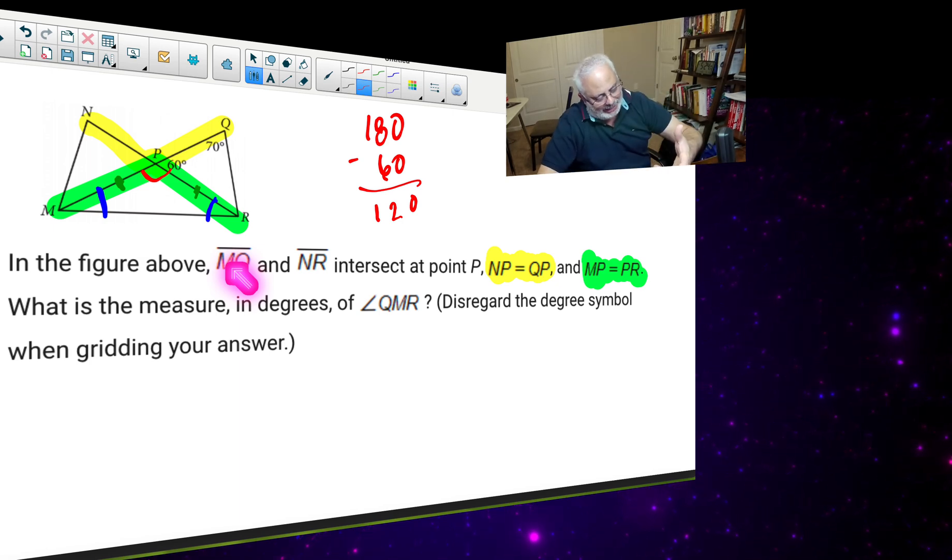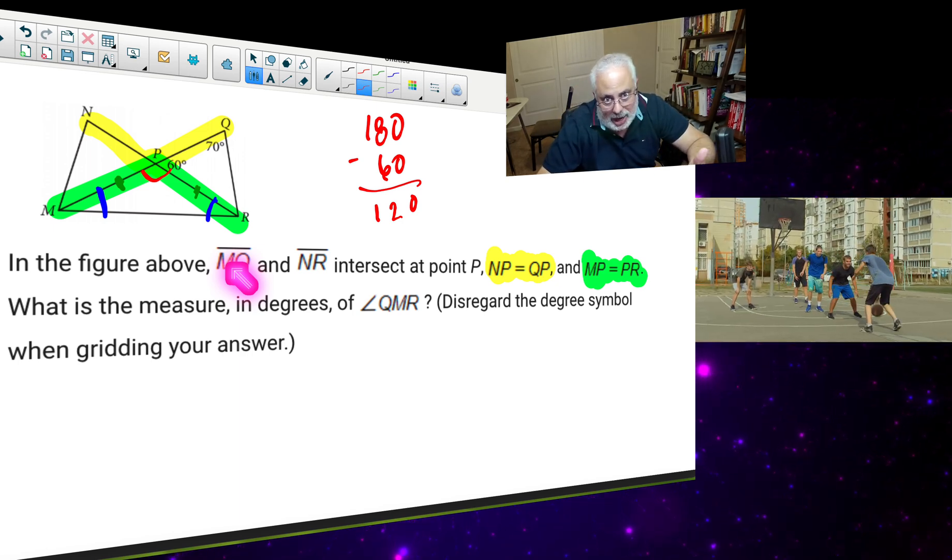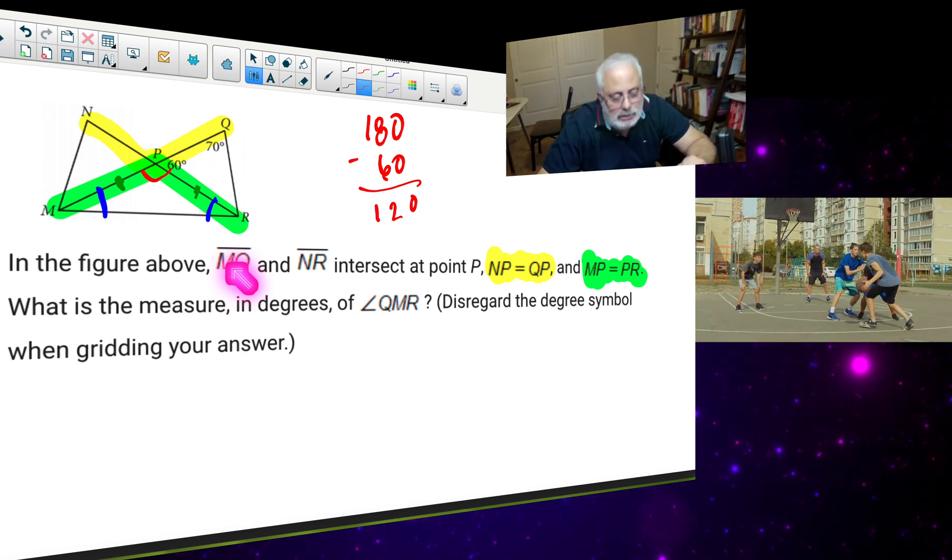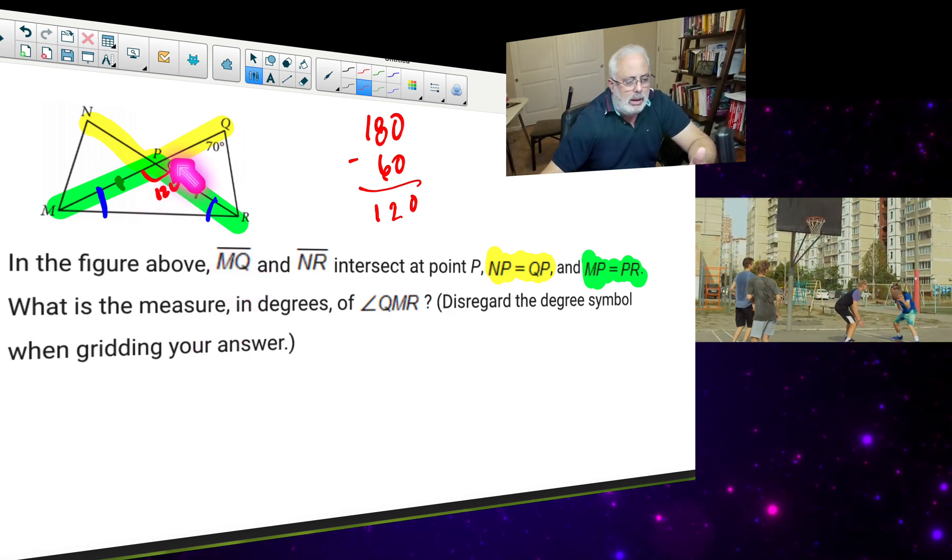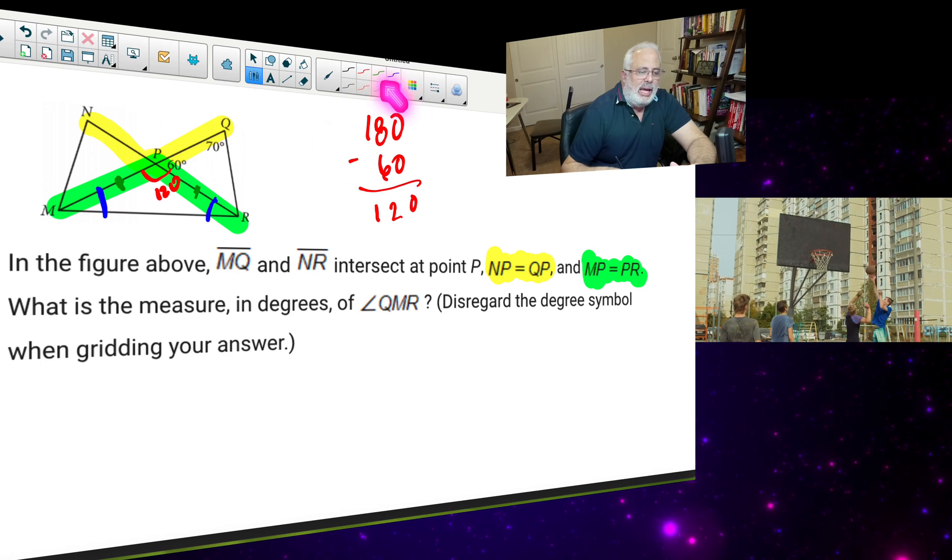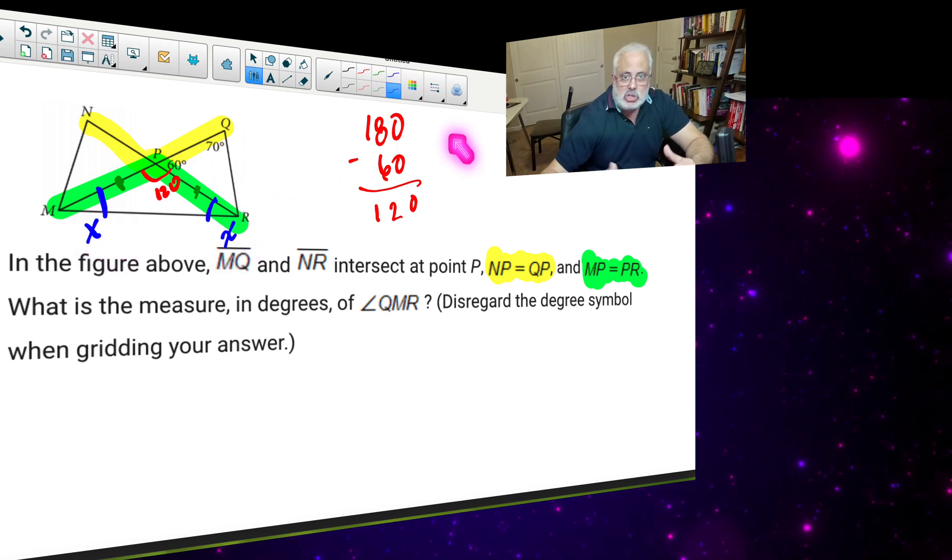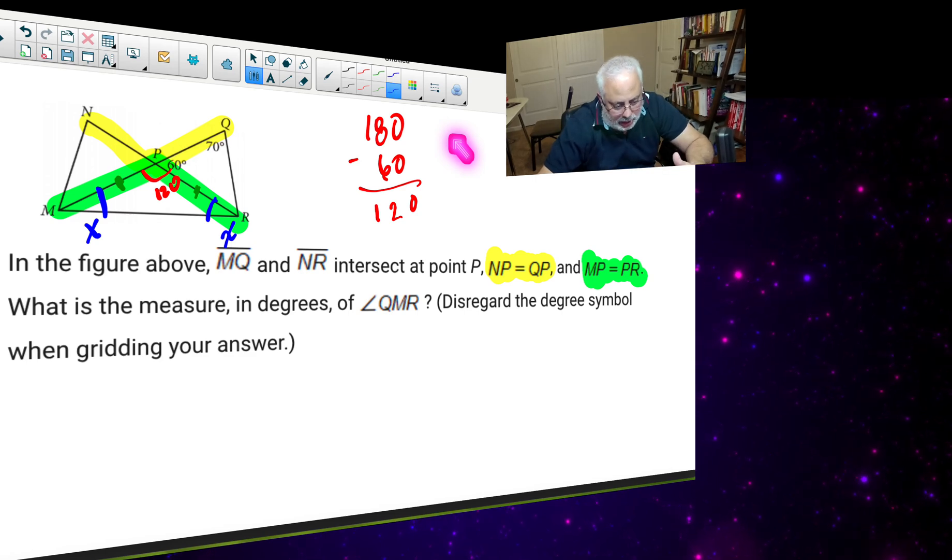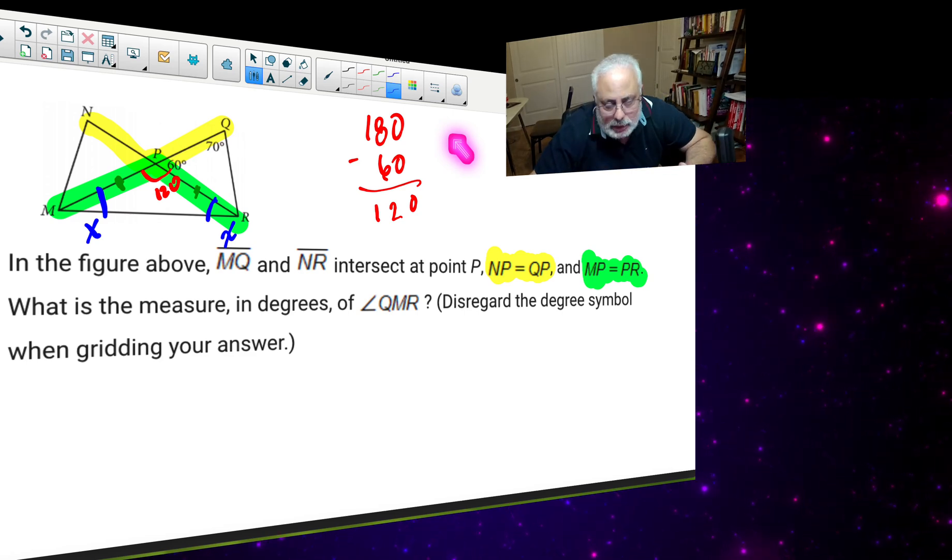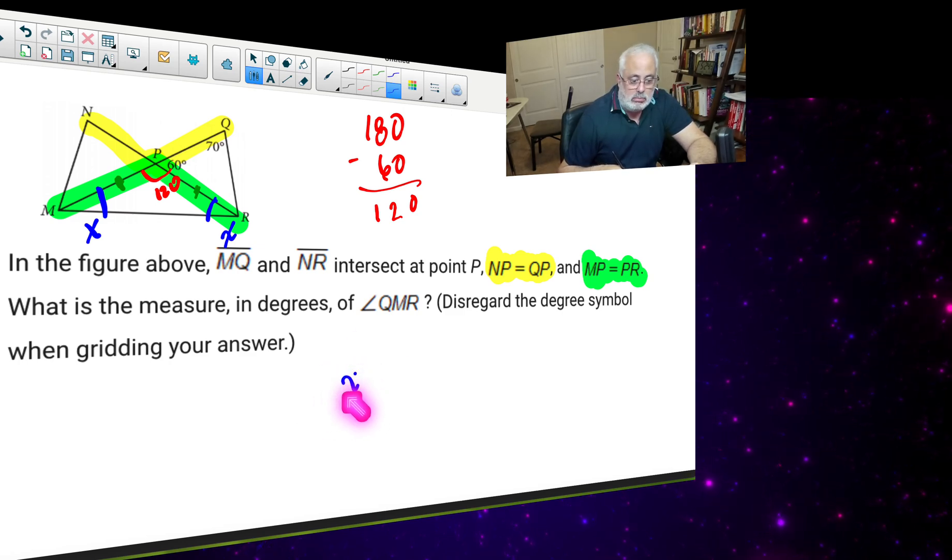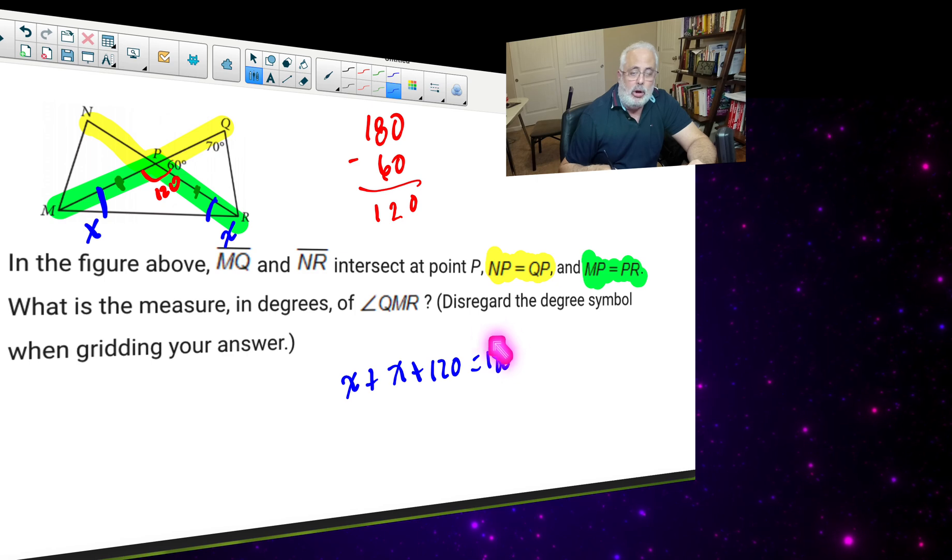Another player that at the beginning of the conversation we didn't know that that player was right there, hidden. So we have 120. But I know that the blue is X and the other blue is X. And I know that the sum of the interior angles in every triangle is equal to 180. That's it. This is another hidden player. So I can say that X plus X plus 120 is equal to 180. Another hidden player.